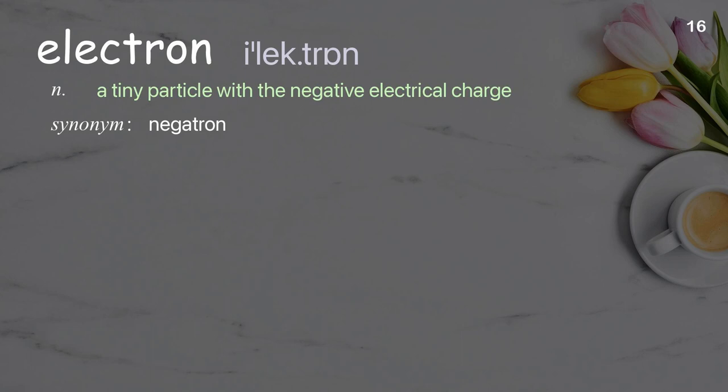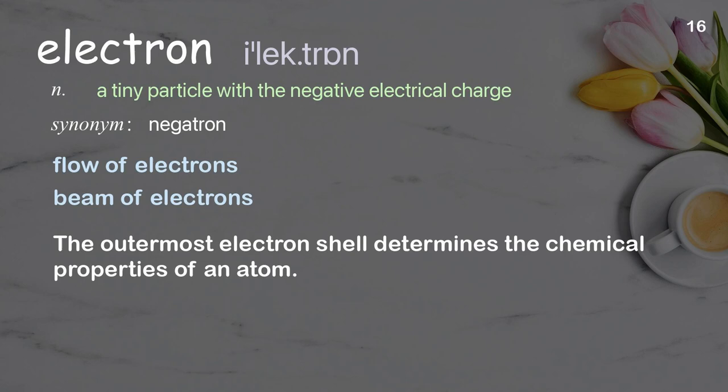Electron: A tiny particle with a negative electrical charge. Examples: flow of electrons, beam of electrons. The outermost electron shell determines the chemical properties of an atom.